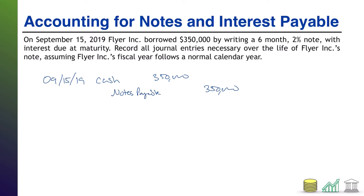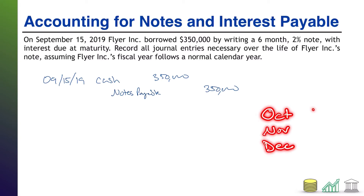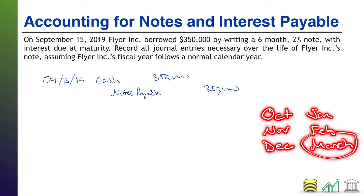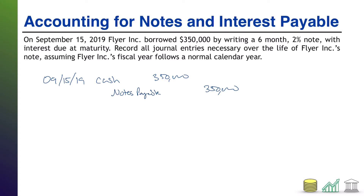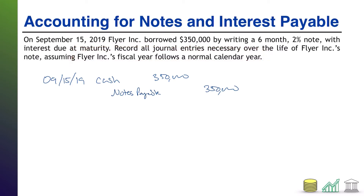The next time we are going to need a journal entry — this is a six-month note, so if it started on September 15th, then we count our months: October 15th, November 15th, December 15th, January 15th, February 15th, and finally March 15th. So March is going to be when this note finally comes due. However, there's going to be a hiccup because Flyer Inc.'s fiscal year follows a normal calendar year, which means they're going to close their books on December 31st. And when they close those books, they are going to have to do an analysis of whether or not there are any revenues or expenses related to the current year, 2019, that need to still get recorded in that year, that haven't been recorded yet.